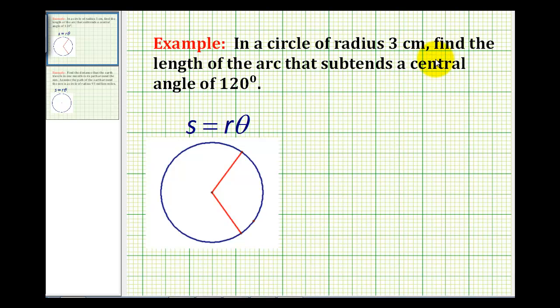In a circle of radius three centimeters, find the length of the arc that subtends a central angle of 120 degrees.